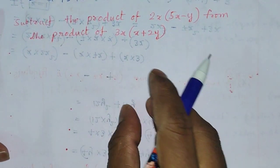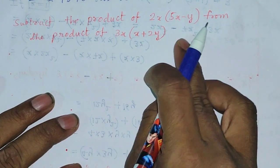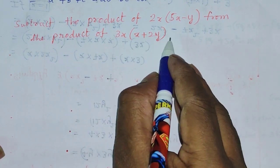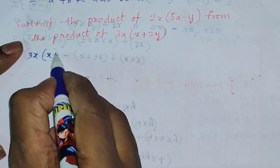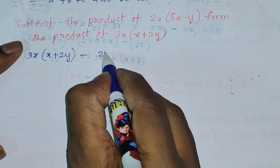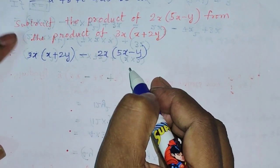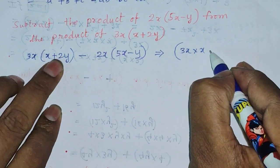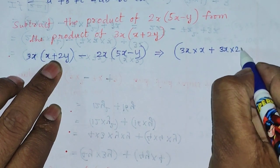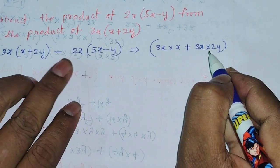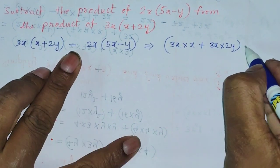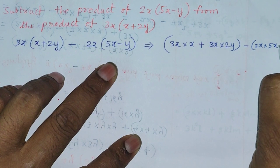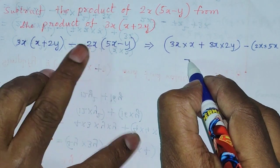Next problem: subtract the product of 2x into 5x minus y from the product of 3x into x plus 2y. Since we subtract from 3x(x+2y), write: 3x into x plus 2y, minus 2x into 5x minus y. Expanding: 3x into x, plus 3x into 2y, minus 2x into 5x, minus 2x into y.